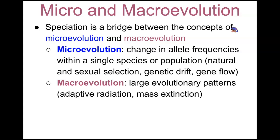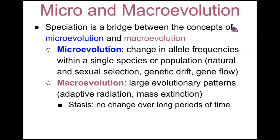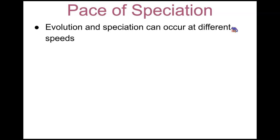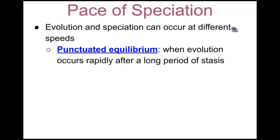In macro-evolution, these are large evolutionary patterns that are observed — things like adaptive radiation and mass extinction. Stasis means there is no change over long periods of time. Regarding the pace of speciation: evolution and speciation do occur at different speeds. Punctuated equilibrium is when evolution occurs rapidly after a long period of stasis when nothing was really changing.